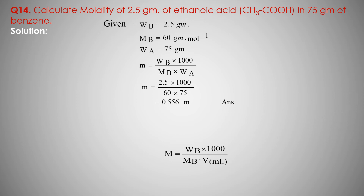Molecular mass Mb of ethanoic acid CH3COOH equals 60 gram mol inverse. Molality formula: m equals Wb upon Mb into Wa, with 1000 multiplied. Putting in values: Wb is 2.5, into 1000, upon Mb 60, into Wa 75. Molality equals 0.556.